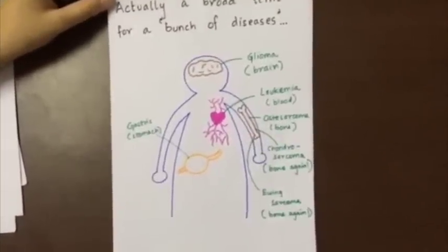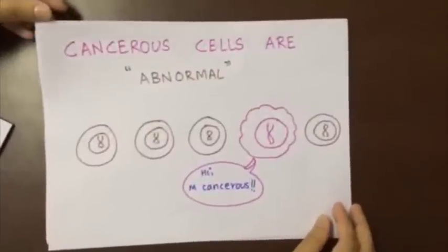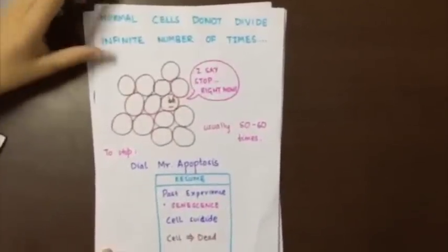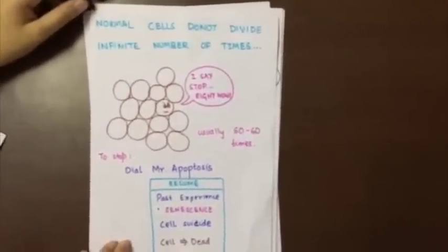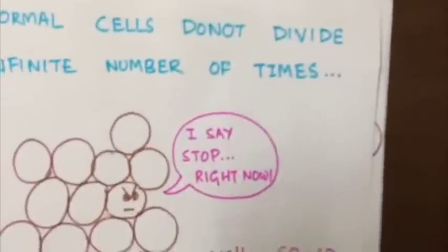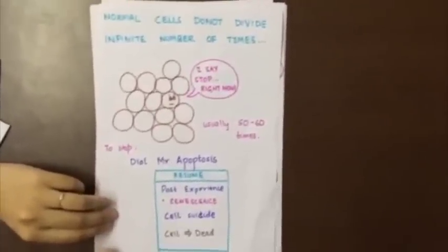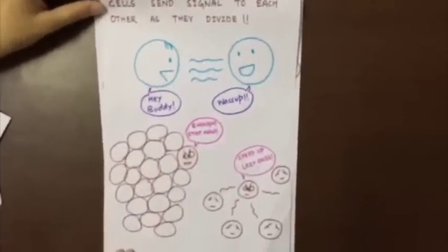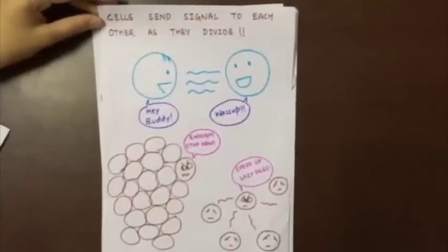How are all these cancers related? Cancerous cells are abnormal cells that divide without control. To understand why cancer cells are abnormal, we need to understand what normal cells are like. Cells divide through a process known as mitosis, where they replicate their DNA and divide it into two. Normal cells don't divide infinitely though. Normal body cells stop dividing after a certain number of generations, usually around 50 or 60 times, where the cells commit apoptosis — cell suicide. This whole process is called senescence. Normal cells are also able to regulate how often they divide; cells send signals to each other as they duplicate, slowing down if it gets too crowded and speeding up if more cells are needed.